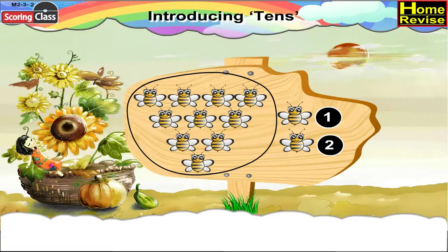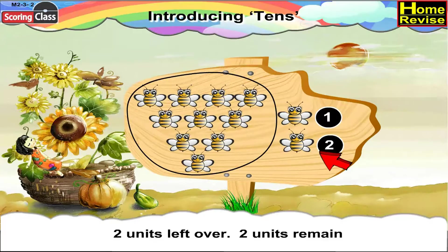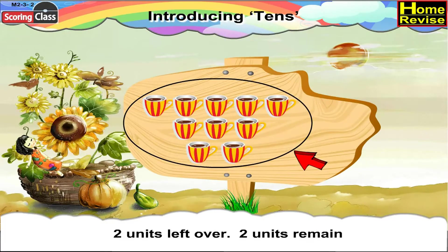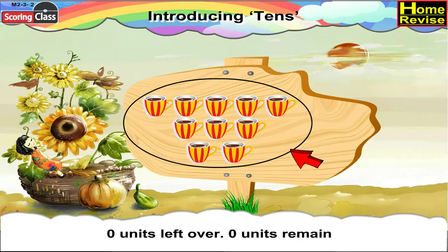Now let us see the bumblebees. If we try and make a group of ten, we will see that two bumblebees are left over, or there are two units left over. Here, ten cups are there in the picture. If we make one group of ten cups, nothing is left over. So zero units remain.